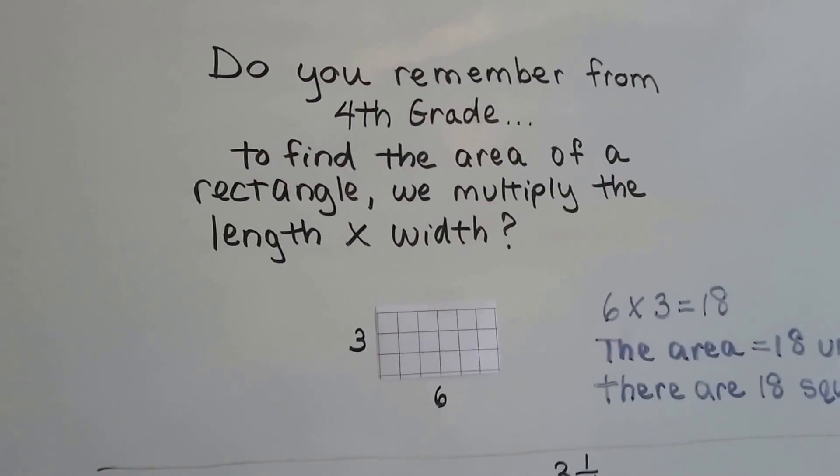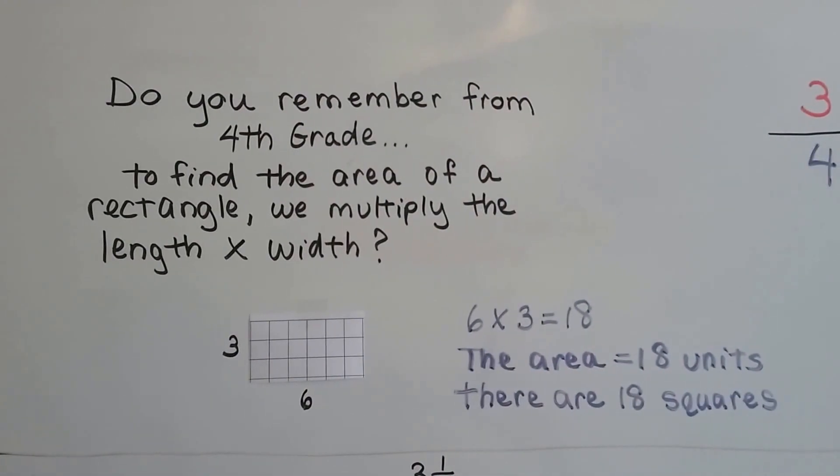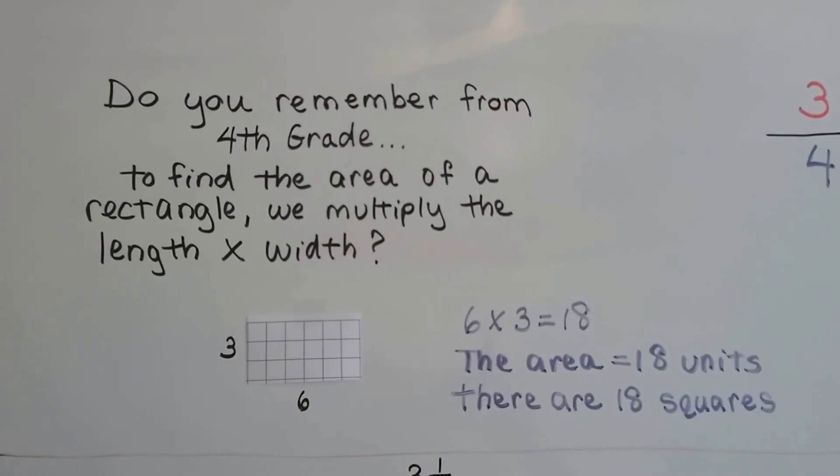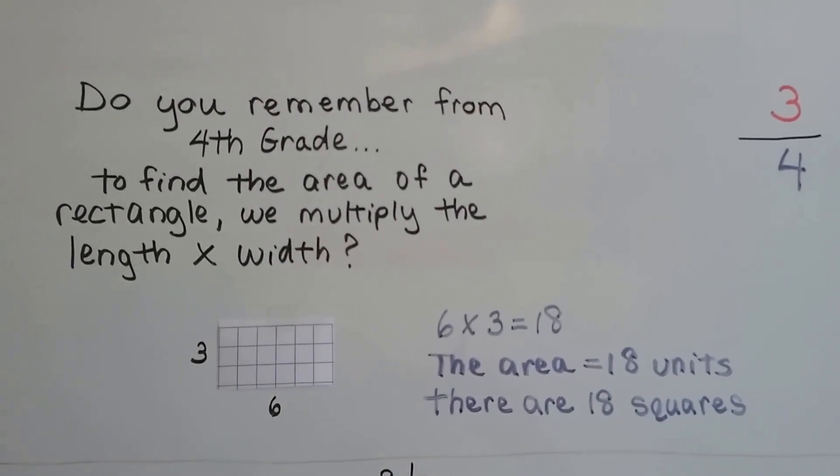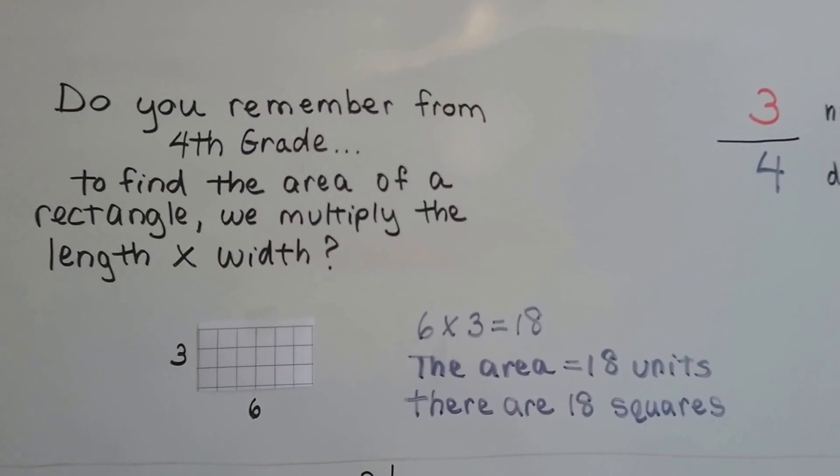Do you remember from 4th grade to find the area of a rectangle we multiply the length times the width? The length is 6 and the width is 3. We do 6 times 3 and the area is 18 units. There's 18 squares.